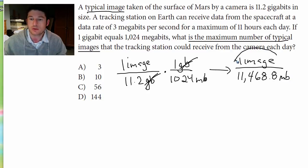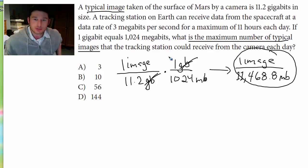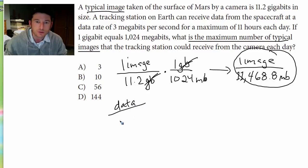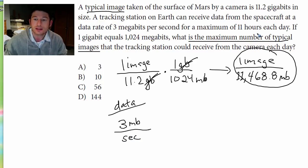So that's one image at 11,468.8 megabits. Now we've got to figure out how much information is coming into the station. The tracking station on Earth receives data at 3 megabits per second for 11 hours each day. Let's write this down as a separate area: 3 megabits per second for 11 hours each day.